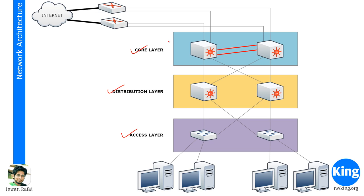Access layers are layers of devices which directly connect to end devices. So all these end devices that you have in your office, they all connect to the access layer switch. Typically access layer switches are not very expensive switches — they're reasonably low-powered switches. All your computers, laptops, and IP phones connect to these switches.